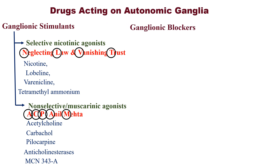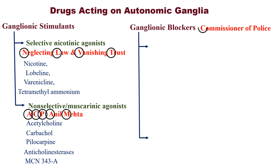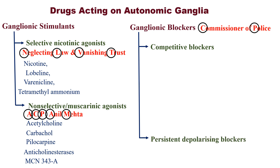Next, ganglionic blockers. Now we should know who will block this criminal gang. Remember — it is the Commissioner of Police. Here C stands for competitive blockers and P stands for persistent depolarizing blockers.